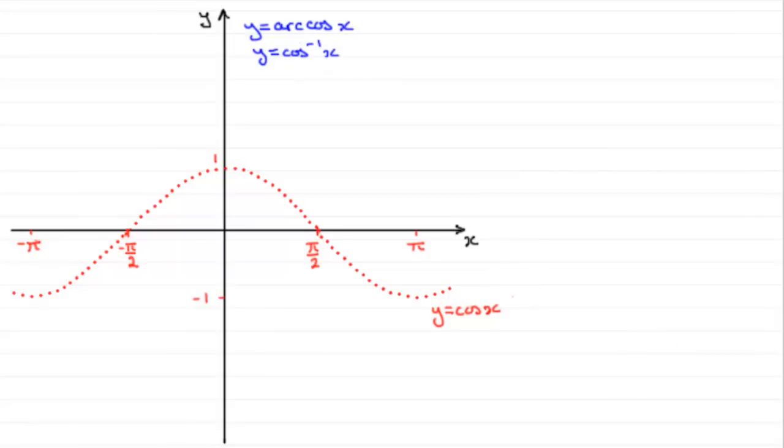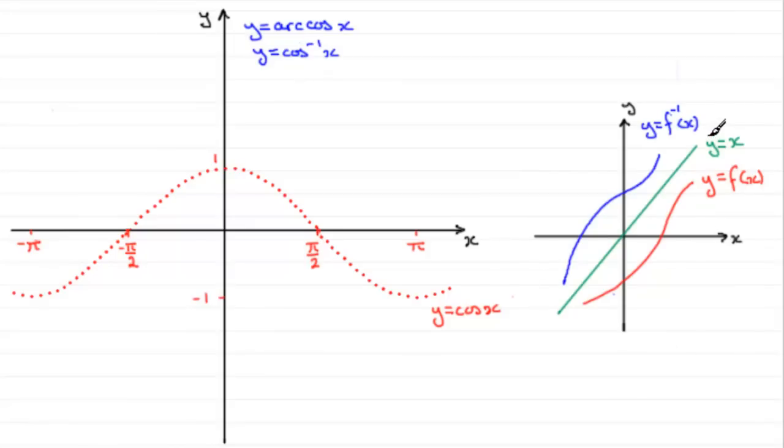What happens is that for any relationship, as I showed in the previous tutorial, we should know that if you've got y equals some value f of x, then the inverse of f of x, f to the minus 1 of x, is always a reflection in the line y equals x.